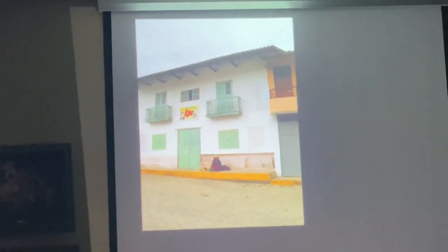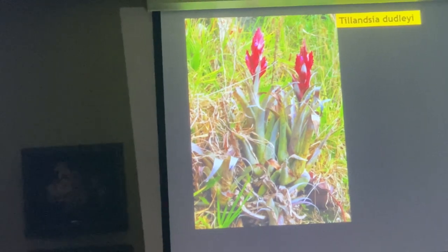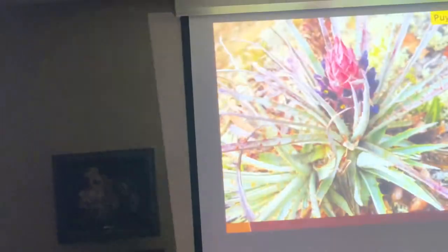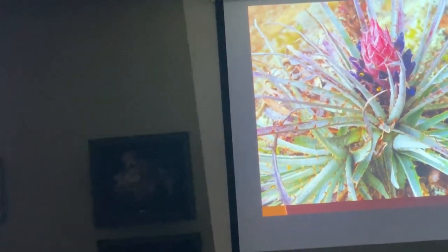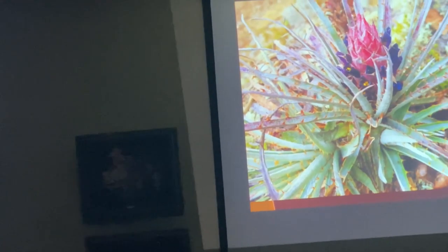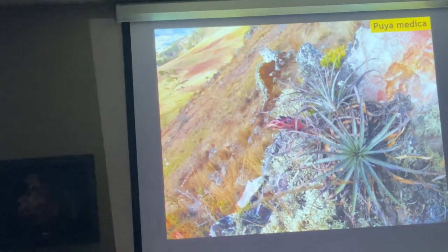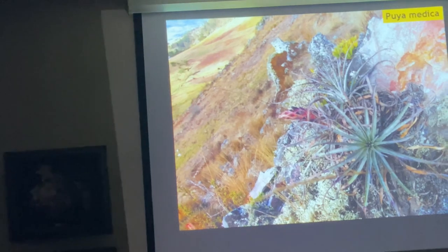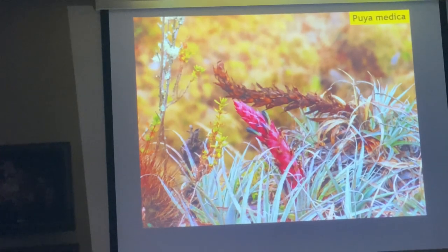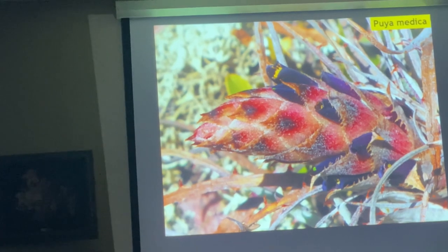Some of the architecture in these small towns. Tillandsia bradyi — also not very common to find in bloom. And this is one of my favorite Puyas — a very tight Puya, maybe 10 inches in diameter, it doesn't get much bigger. Puya medica, and this is a place where it grows on little rocky outcrops, with almost black — really deep purple — flowers.